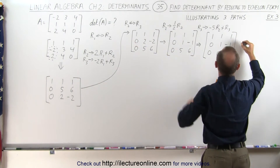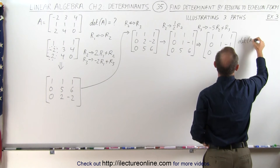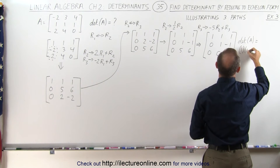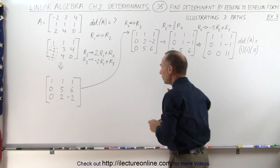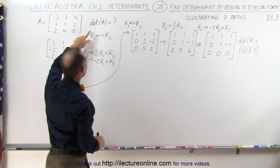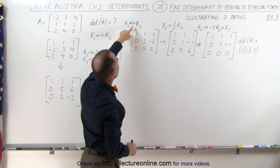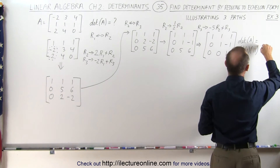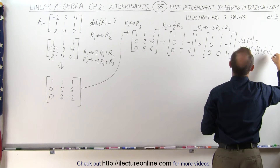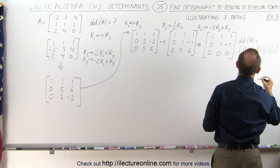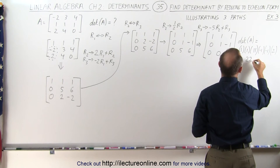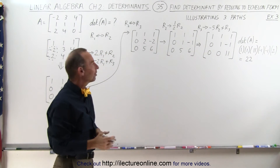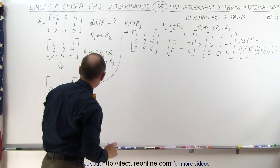Based on Method 1, the determinant of the original matrix A equals the product of the diagonals: 1 times 1 times 11. But we have to keep track — we had one interchange of rows, then another interchange of rows, and we divided row 2 by 2. So we multiply by negative 1, then negative 1 again, then multiply by 2. That gives a positive 22. So the determinant of A is 22. We don't know yet if that's correct, but we'll gain confidence when the other methods give the same result.